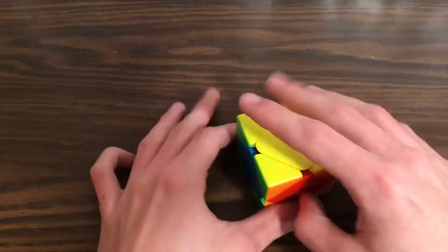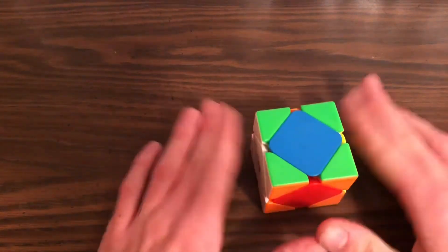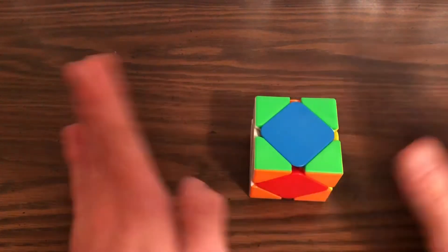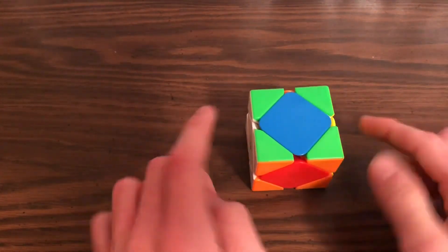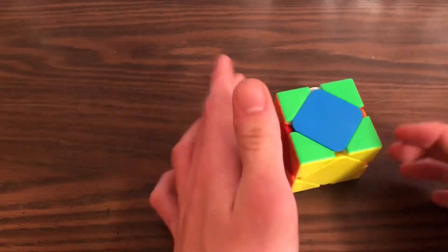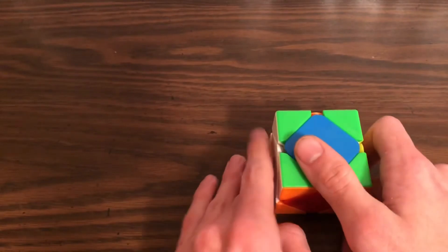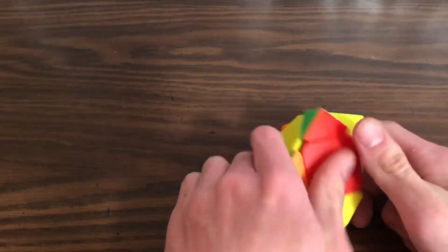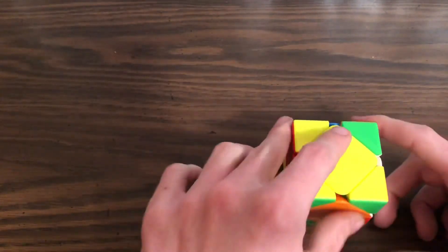Doesn't matter how you hold it as long as you're holding the white and yellow facing the sides. Not front to back. Not top to bottom. Like this. And again, down, down, up, up. 180 degrees. Down, down, up, up.